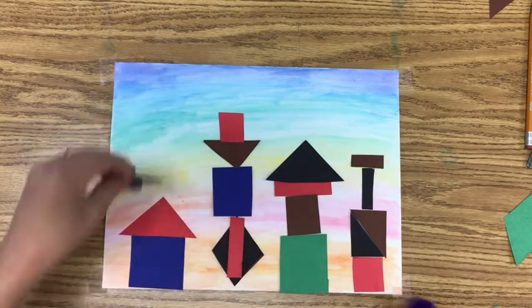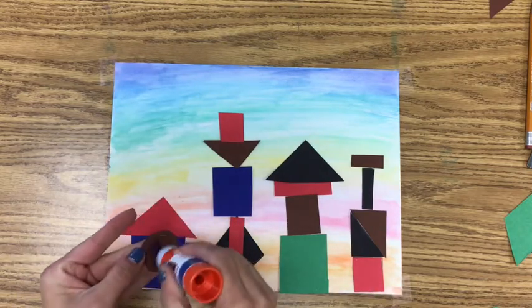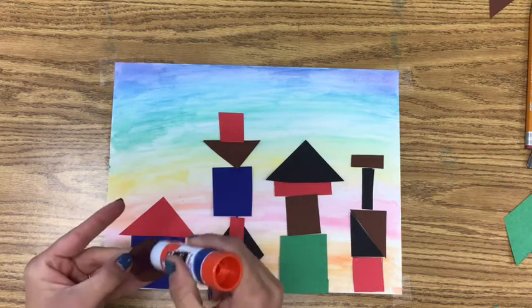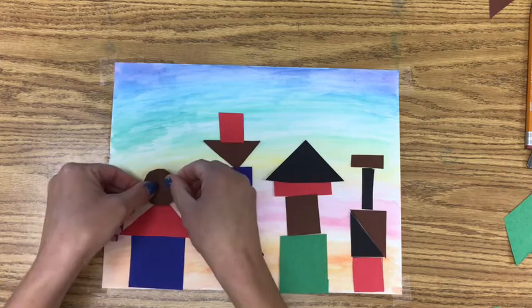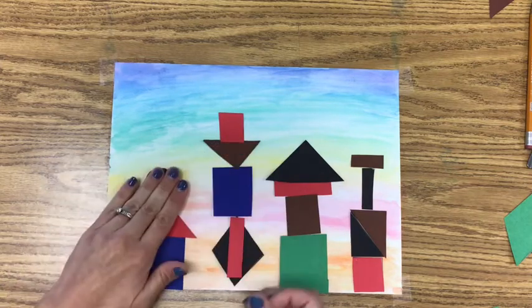Watch again. I put the glue all over one side, then flip it over and press it down. Repeat with each shape that you're going to use.